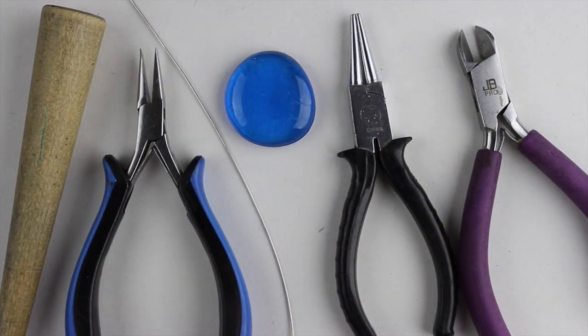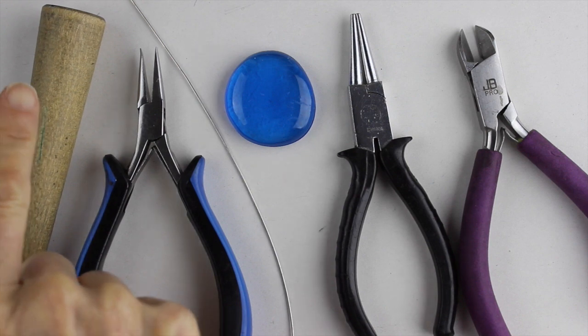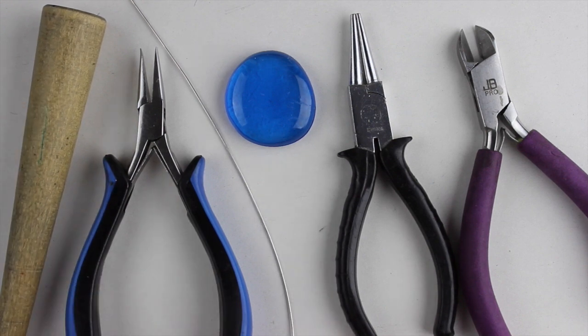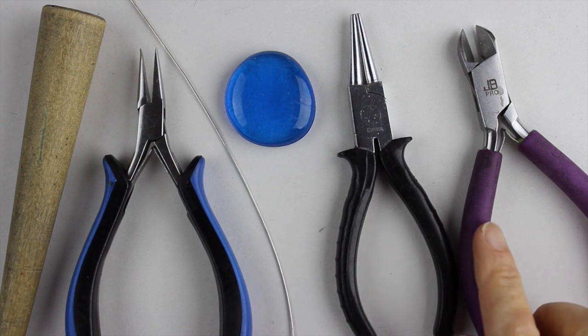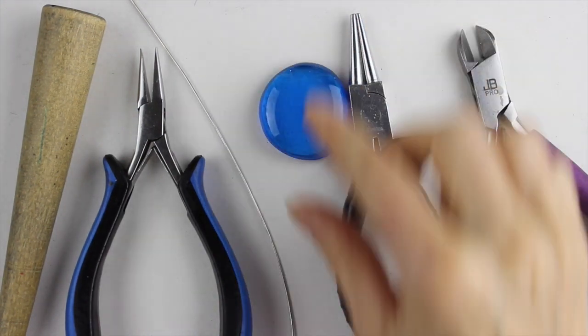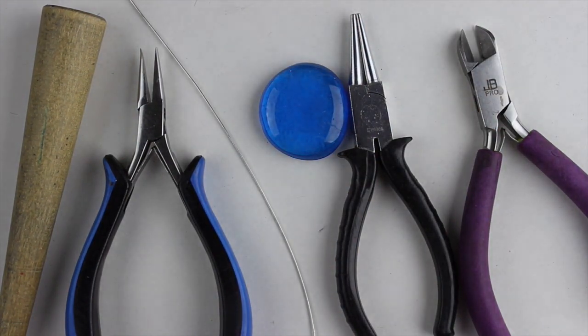So what you're going to need for this project is a round form—can be a ring cone or a pill bottle—flat pliers, round pliers, cutters, your glass bobble, and 20 gauge wire.